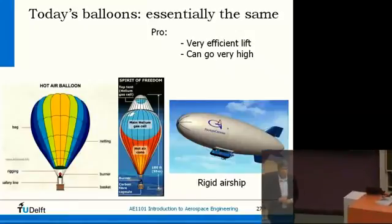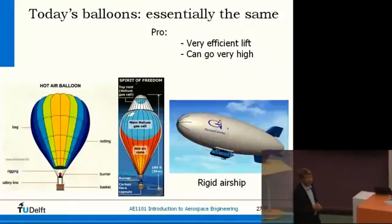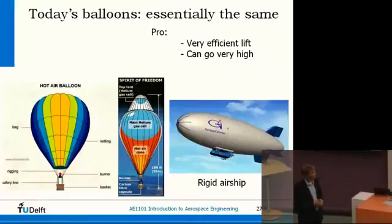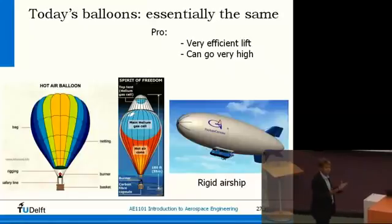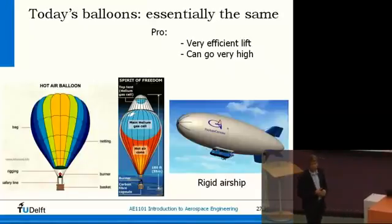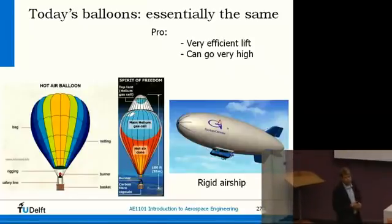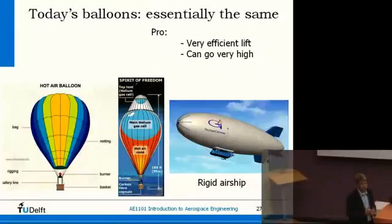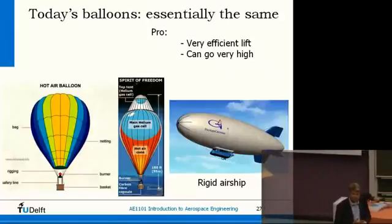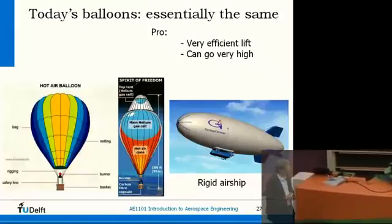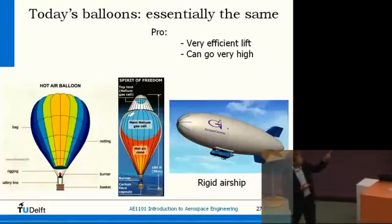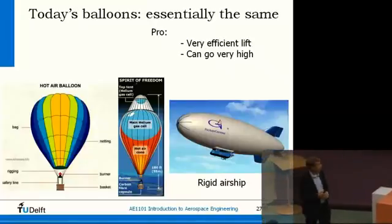So why do we need other aircraft? Why not stick to ballooning? It gives you lift in a very efficient way, and it can go very high — higher than conventional aircraft. The drawbacks: it's slow, and dependent on the wind. We could make a very good propulsion system on the Zeppelin with powerful engines — but there's a huge volume needed, and you get a lot of drag, a lot of resistance from the air when you want to go fast.